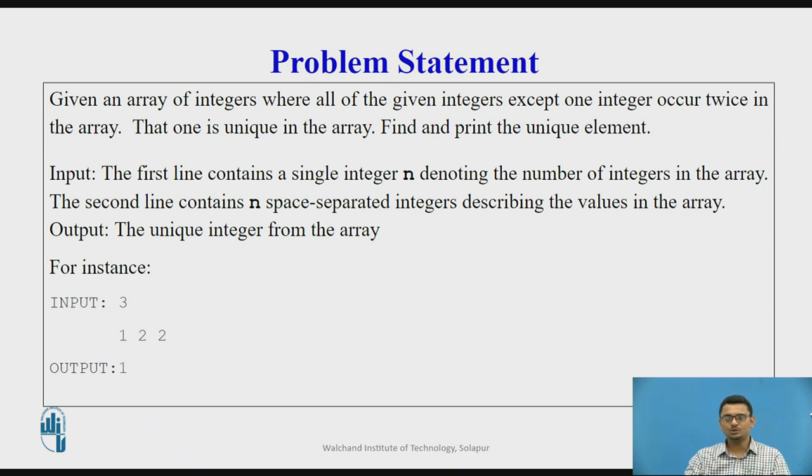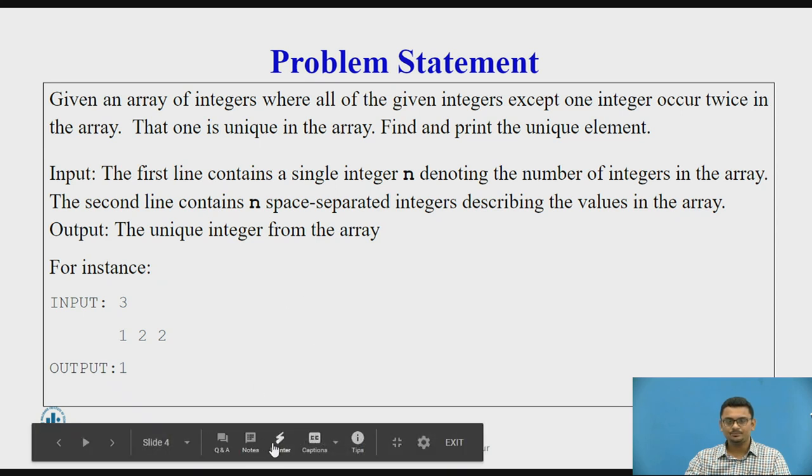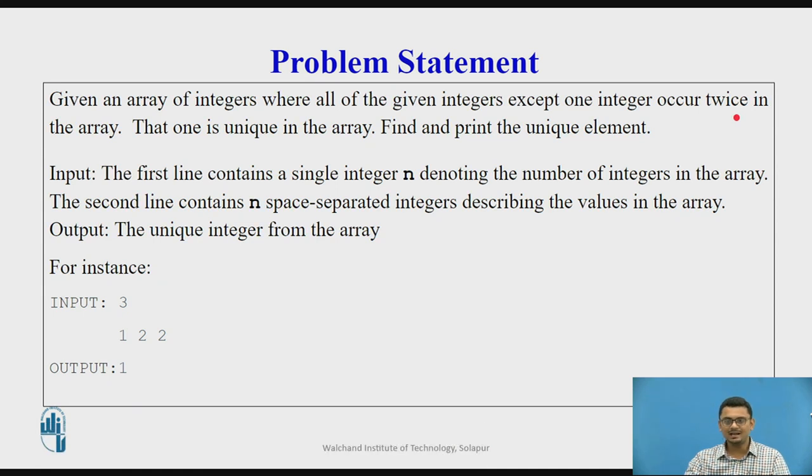Consider that you are given an array of integers where all the given integers except one occur exactly twice in the array. There is one unique element and all the other elements are occurring twice. The unique element in the array is to be found out and printed. The input will be the first line contains the size n, and the second line will be the n space-separated integers describing the values in the array.